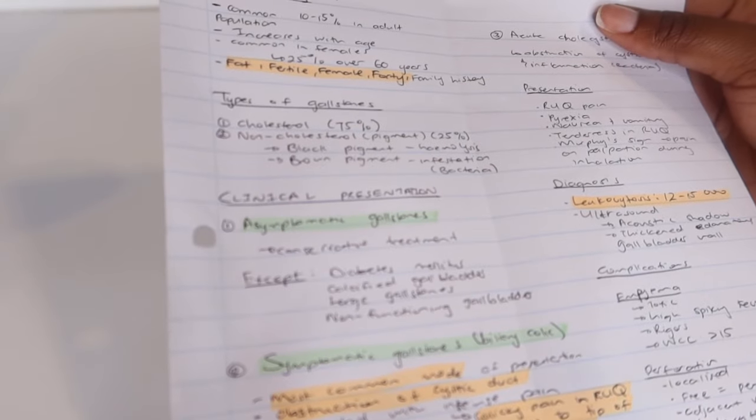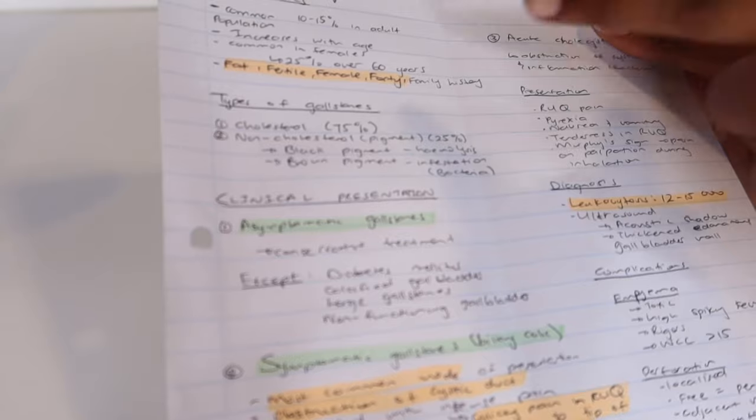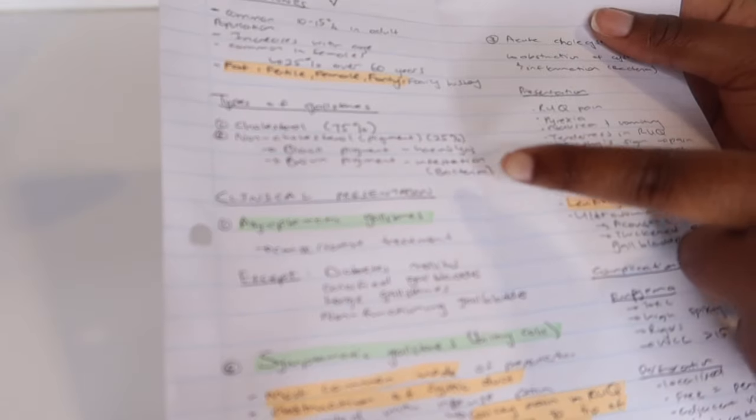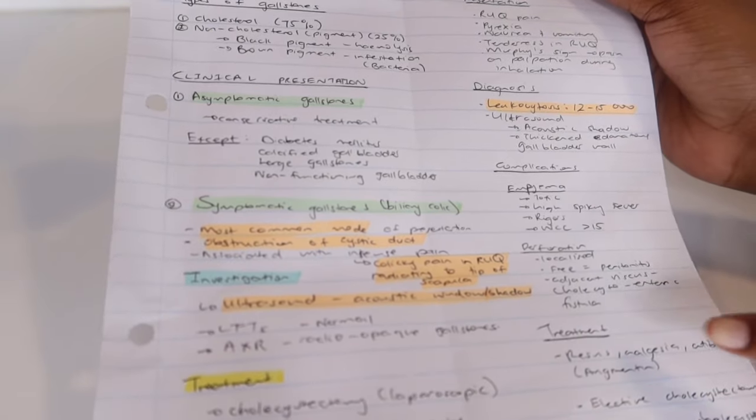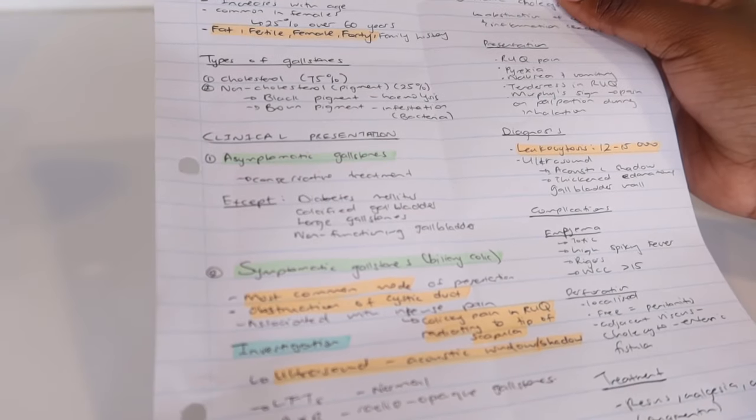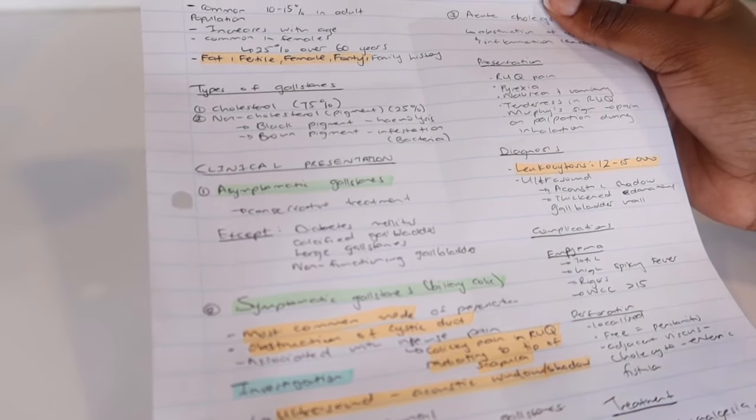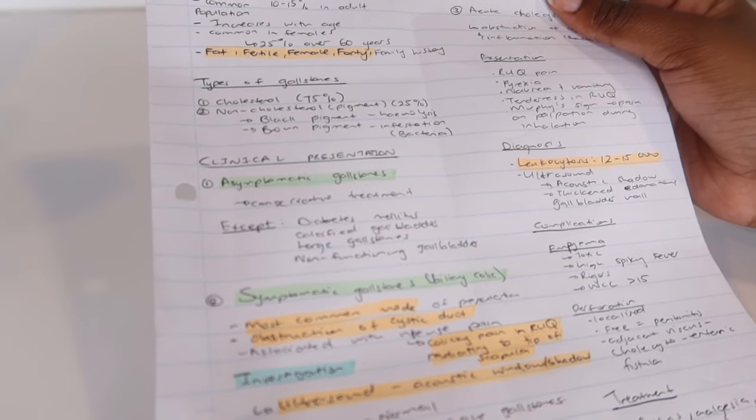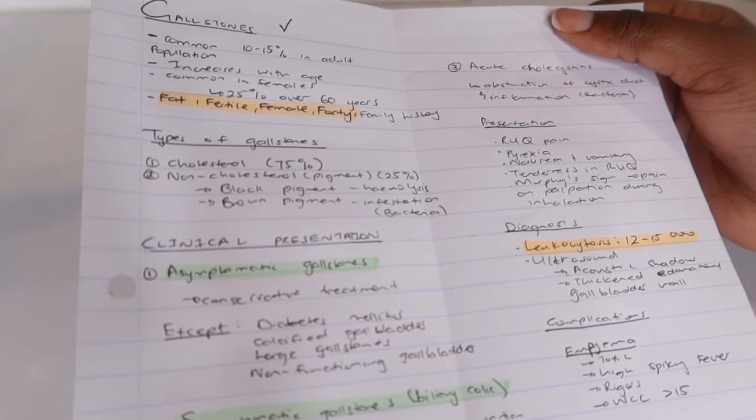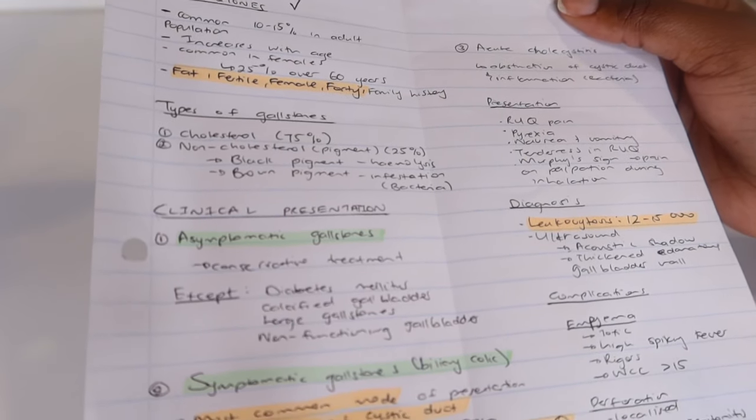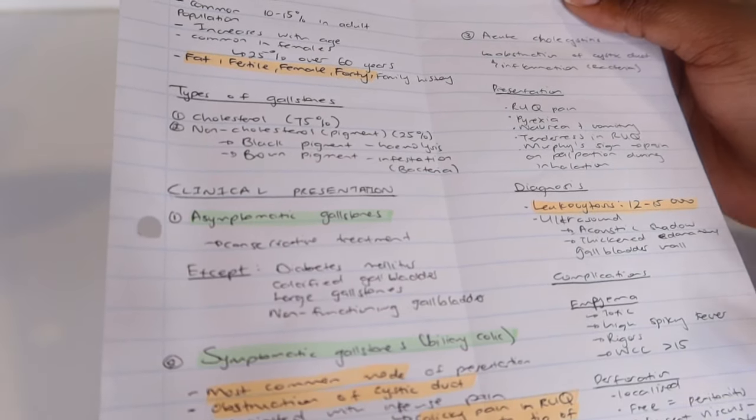And there are my subtopics, underlined, types of gallstones, clinical presentation, diagnosis, complications, and treatment. I also make use of highlighters to emphasize key important points. Another thing you can see is that my text is written in small handwriting so that I can maximize the space.